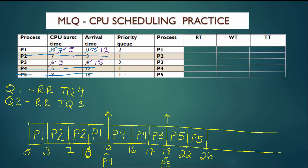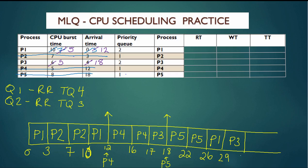Now only P1 and P3 remain in the ready queue. We mark P5 as completed, and do regular round-robin with a time quantum of 3 to finish P1 and P3. P1 arrived before P3 (at time 12), so P1 goes first, gets three time units, runs until time 29, and has two time units left. Then P3 runs until time 32. Then P1 finishes its last two time units at time 34. Then P3 finishes its last two time units at time 36.